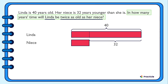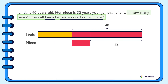Now let's draw another part to represent the number of years Linda takes to be twice as old as her niece. Remember that when Linda grows older by this number of years, her niece is also going to grow older by this number of years. To find the number of years that Linda would take to be twice her niece's age, we need to find the value of this orange part.